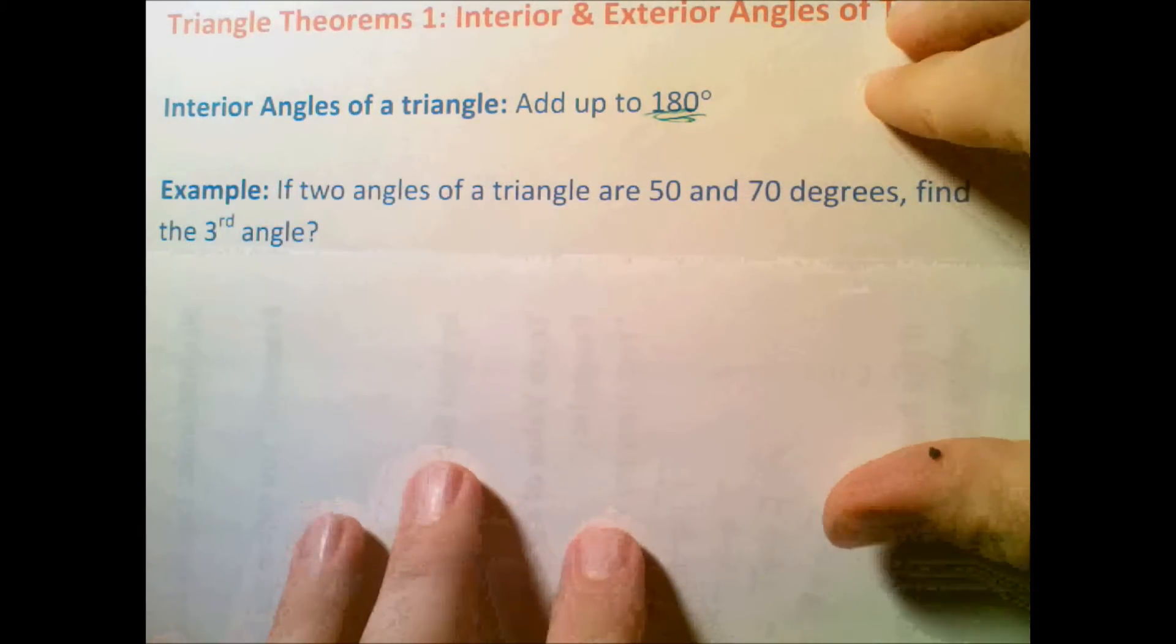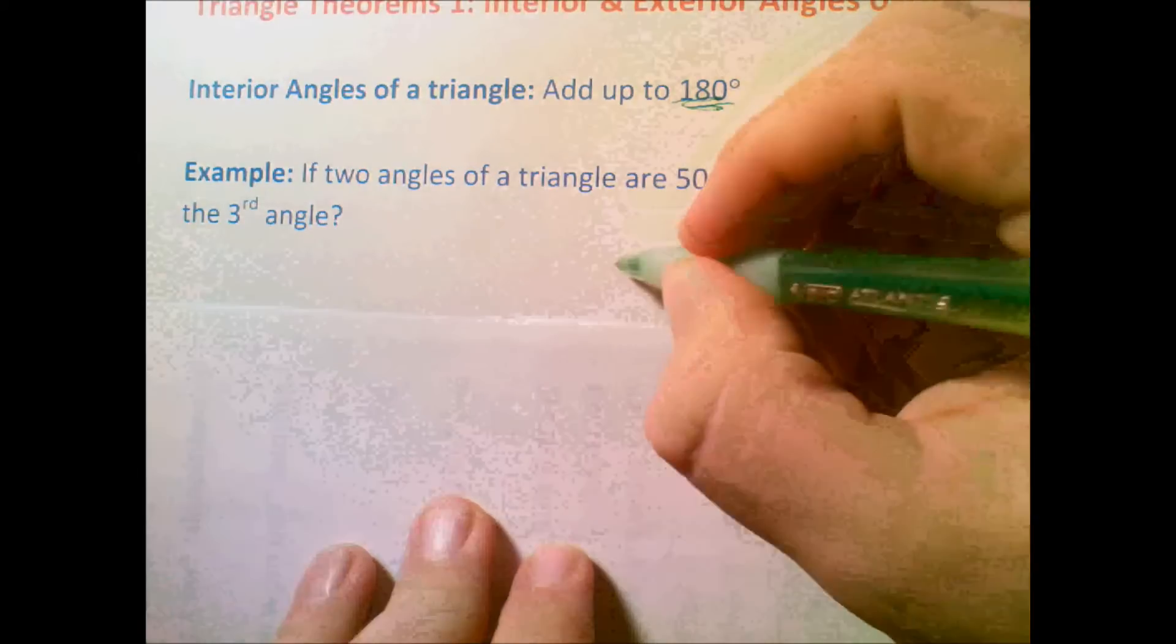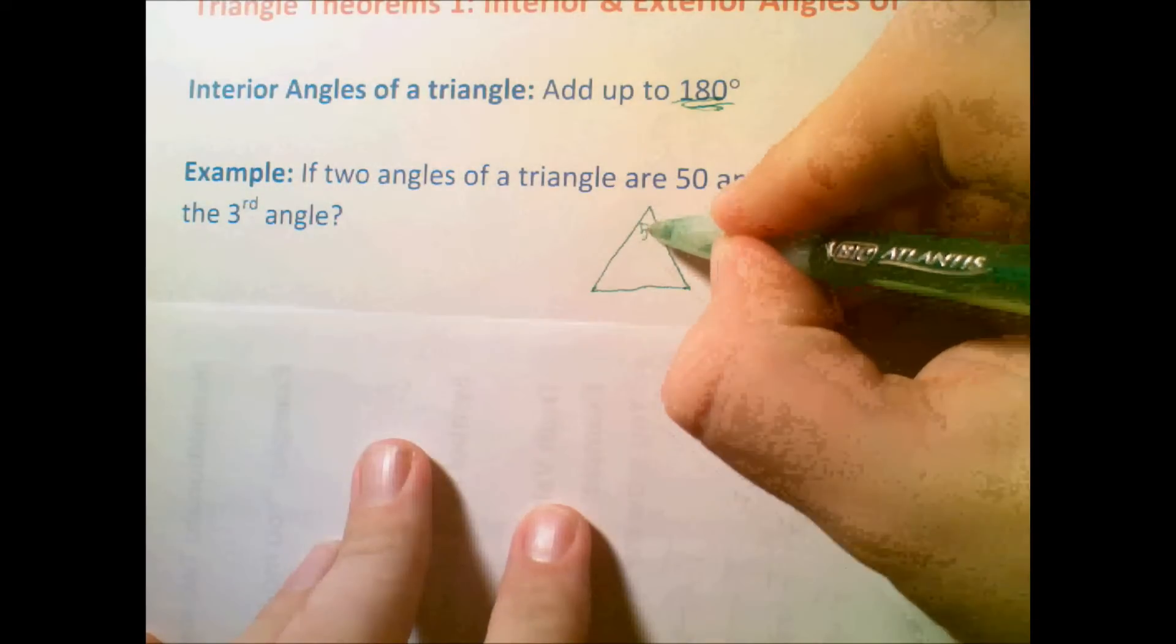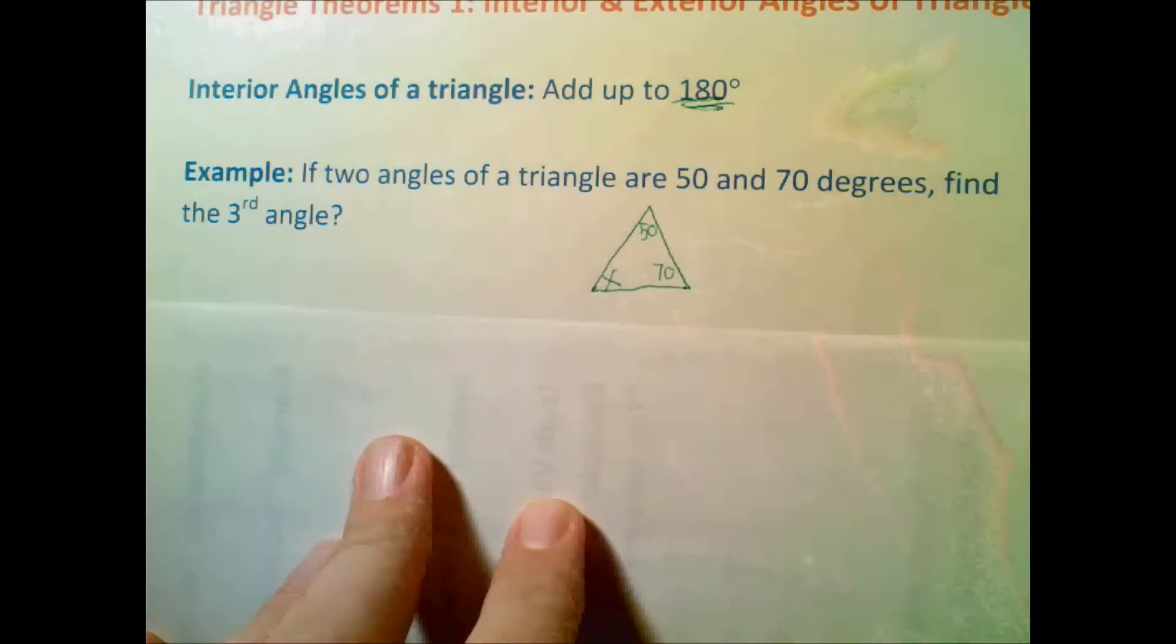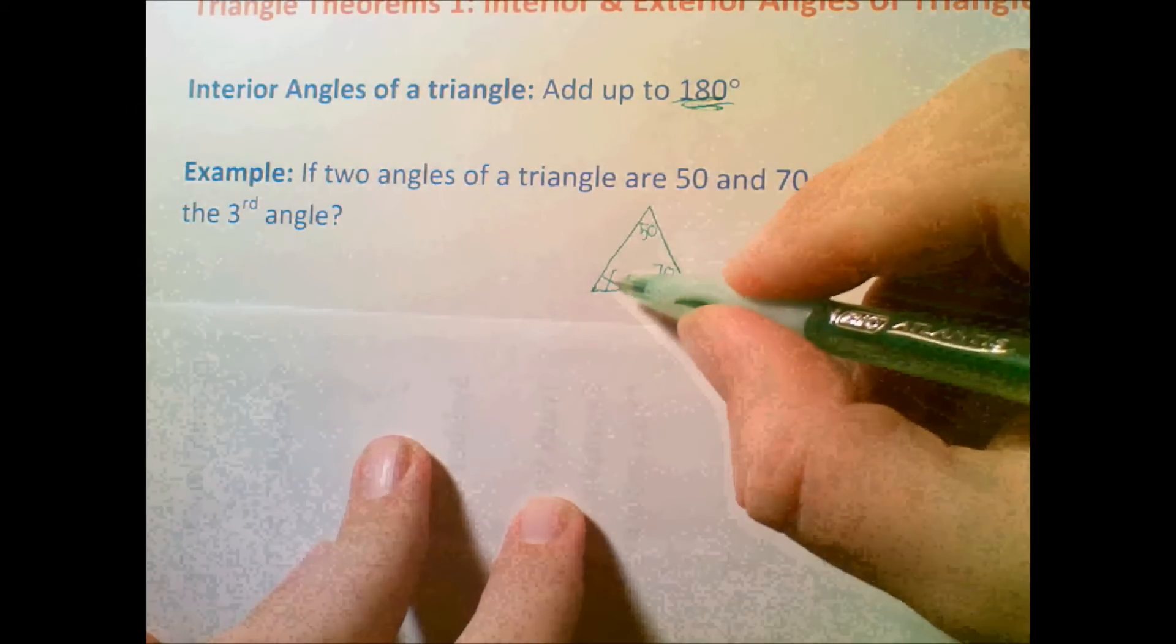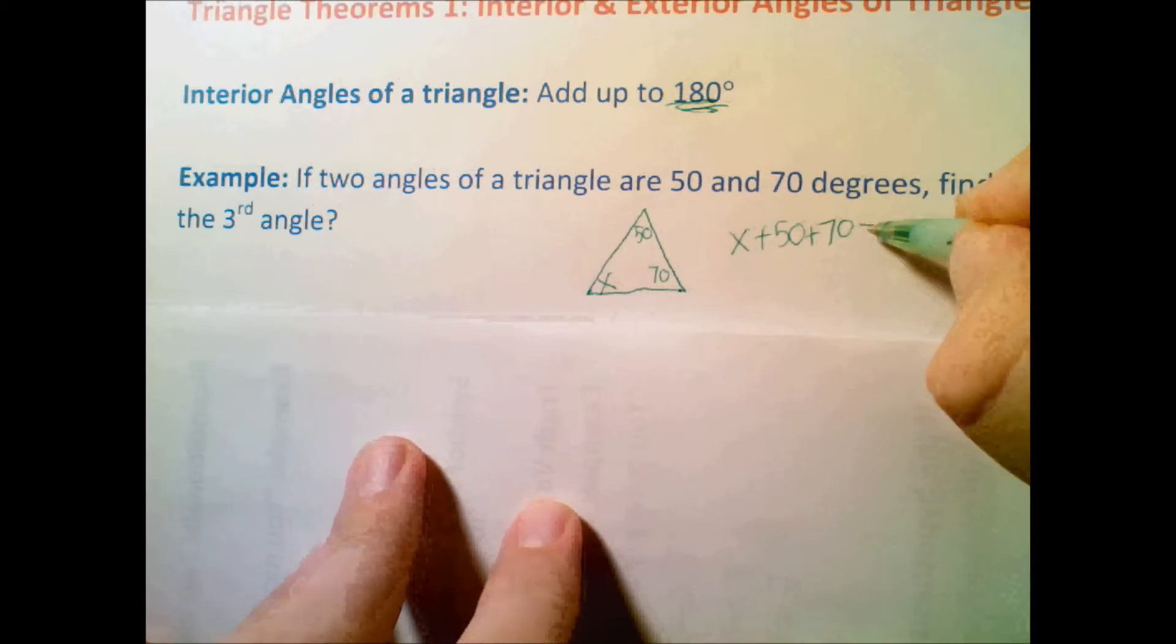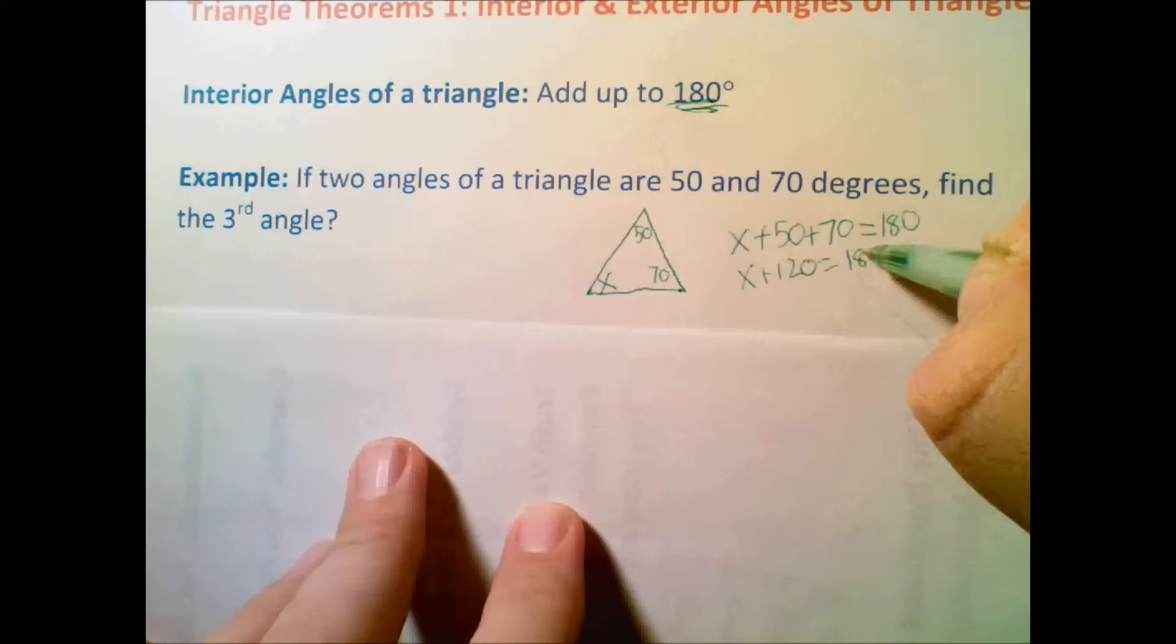Now, here's an example. If two angles of a triangle are 50 and 70 degrees, find the third angle. One thing to remember is that whenever you do not have a diagram, draw a diagram. So I know the two angles are 50 and 70. I need to figure out what the third one is. In this case, I'm going to call this angle X. If this angle is X, we add them all up. So I have X plus 50 plus 70, and that is going to be equal to 180 degrees. So X plus 120 is equal to 180. Subtract 120 from both sides. I get X is equal to 60 degrees. Simple problem.